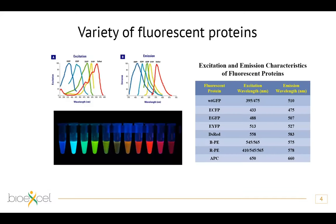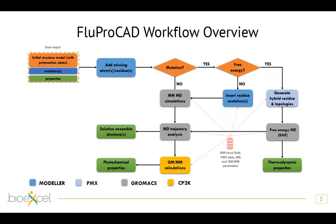Why do we want to study fluorescent proteins computationally? Because there is a large variety of them and their fluorescence can span from blue light all the way to far-red light. Sometimes you need a very specific protein for a specific task and may want to design it yourself. That is where computation comes into play. We developed, within BioExcel, the FluProCUT workflow — fluorescent protein computerized design — which consists of several packages working together.